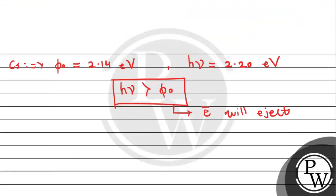Now we will check it out for potassium. If we talk about potassium, the work function is given to us as 2.30 electron volt. The incident energy is 2.20 electron volt. As we can see, the incident energy is less than the work function.